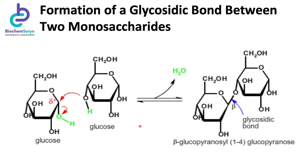How do disaccharides differ from each other? First, the disaccharides differ from one another in their monosaccharide constituents, and secondly, in the specific type of glycosidic linkage connecting them, which we will see later on.